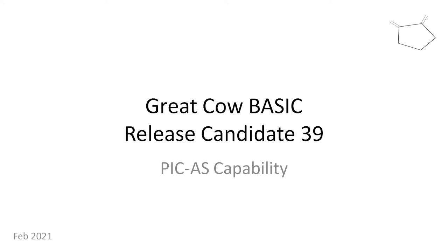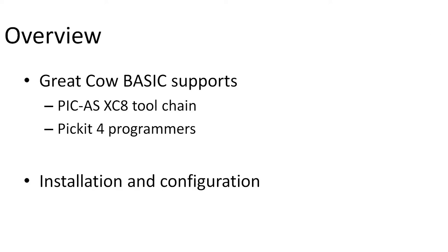Welcome to another Great Cow BASIC tutorial. This is Release Candidate 39, which is going to show you the PICÁS capability. I'm going to go through quite quickly. This release supports PICÁS, the XC8 toolchain, and PICKIT 4 programmers. PICKIT 4 is a nice-to-have; this is very much based around the PICÁS XC8 toolchain. I'll explain that further as we go through, including installation and configuration changes.